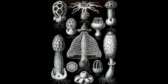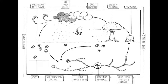Additional groups include earth stars, smuts, bunts, rusts, mirror yeasts, and the human pathogenic yeast Cryptococcus. Basidiomyceta are filamentous fungi composed of hyphae, except for yeasts, and reproduce sexually via the formation of specialized club-shaped end cells called Basidiomyceta that normally bear external spores, usually four. These specialized spores are called Basidiospores. However, some Basidiomyceta reproduce asexually in addition or exclusively.